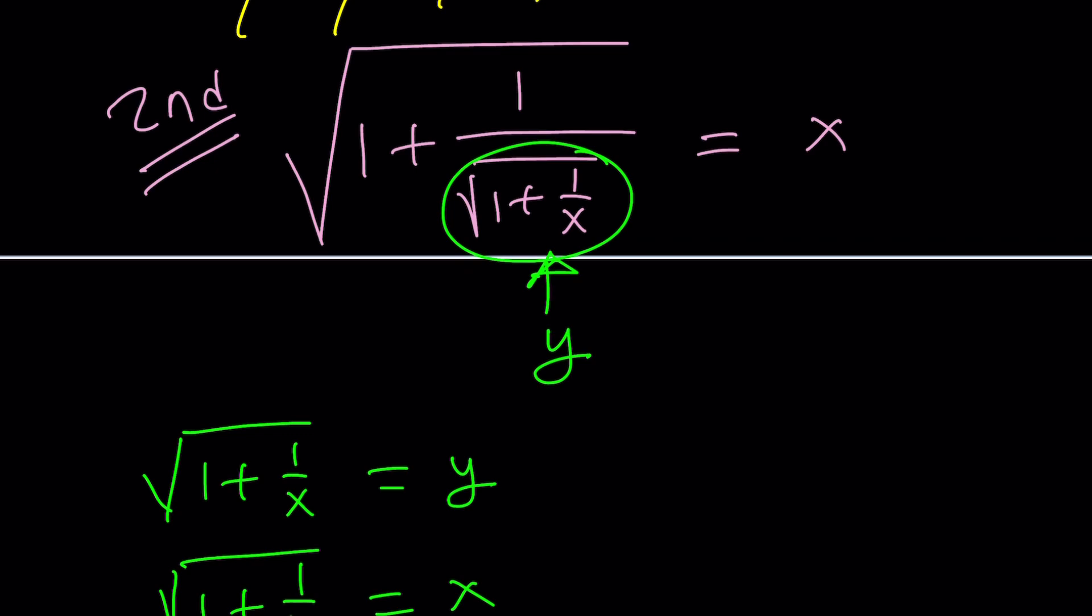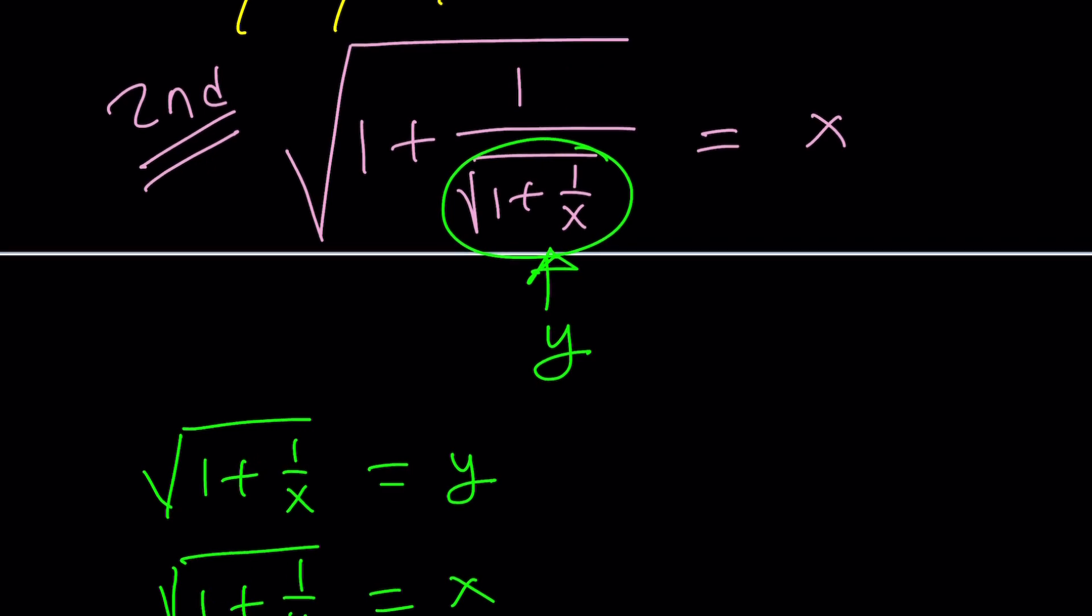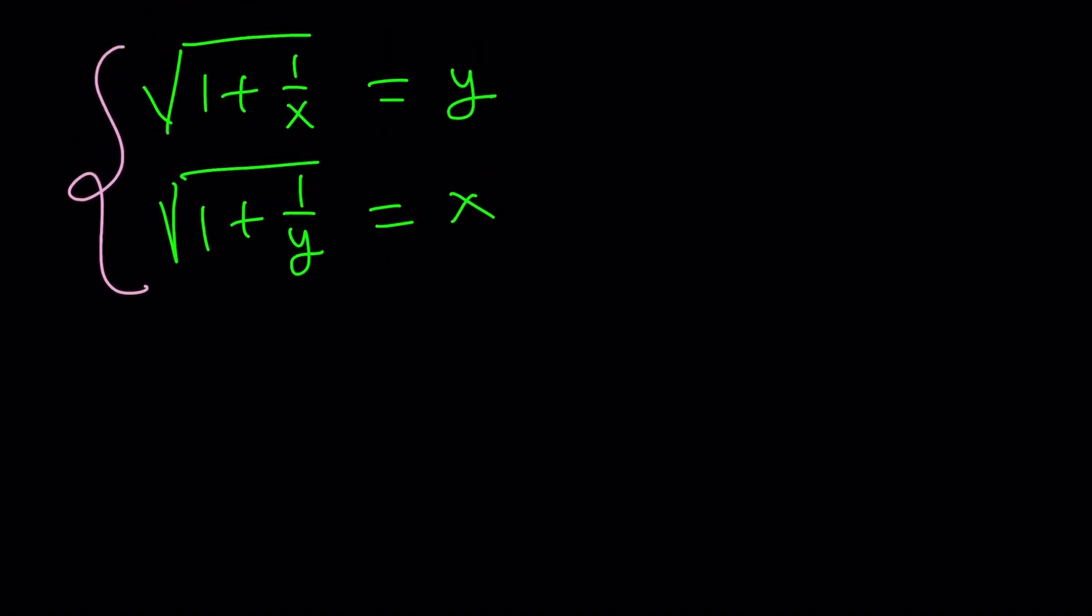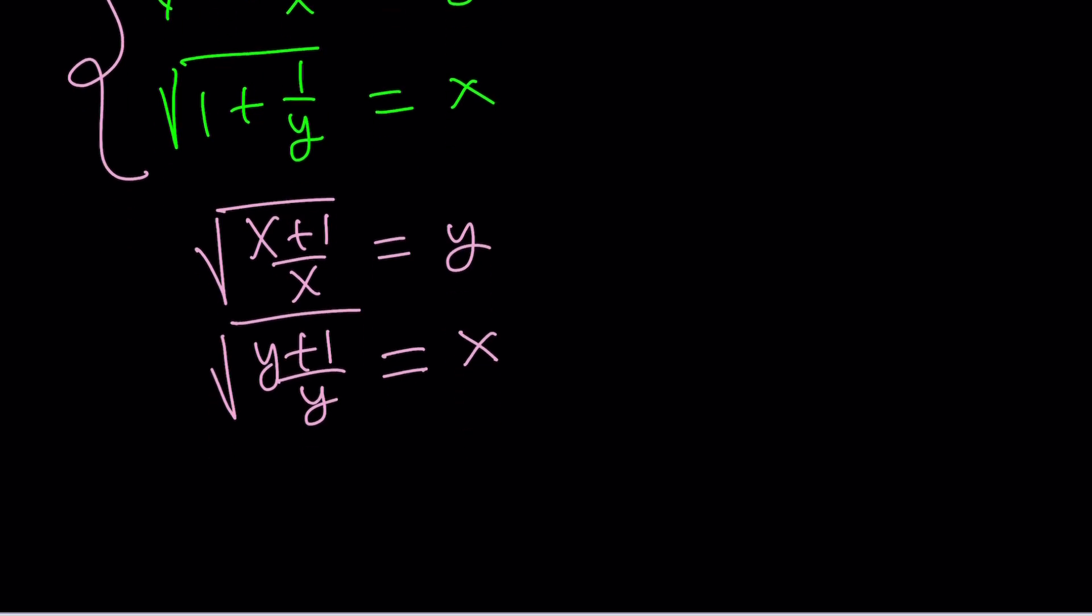So this gives us the following. First of all, square root of 1 plus 1 over x becomes y. And then from this assumption, the square root of 1 plus 1 over y becomes x. Interesting. From an equation in a single variable, we got a system of equations in two variables. Why are we trying to make it complicated? No, not really. This actually simplifies things. Because this is a really nice system. I'm going to go ahead and simplify this. Make a common denominator, write it this way. And write the other one the same way.